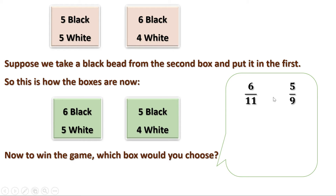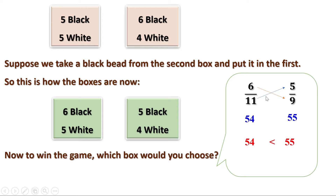Now which is more — 6 by 11 or 5 by 9? There are different methods to check. You can convert to decimals, or use cross-multiplication: 6 times 9 is 54, and 11 times 5 is 55. Clearly 55 is more than 54, therefore 5 by 9 is more than 6 by 11. That means to get a black bead, it is better to select the second box — even though the number of black beads there is only 5, less than in the first box.